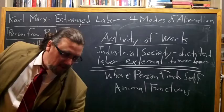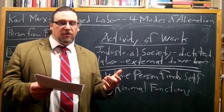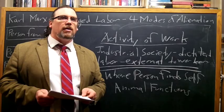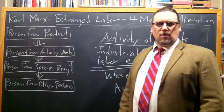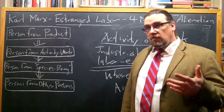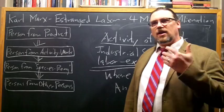Eating, drinking, and procreating are genuinely human functions, but taken abstractly, separated from the sphere of all other human activity and turned into sole and ultimate ends, they become just animal functions — we lose our nature as human beings. When people would look down on workers and say 'all they do is get drunk and gamble,' Marx would say: that's because you've been putting them in the factory, because you haven't given them any work they can take any delight or pride in, that they can identify themselves with.